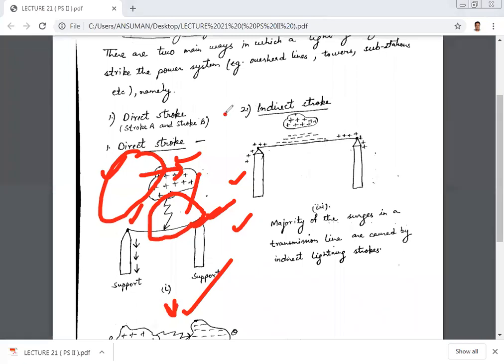In indirect strokes, what happens when the cloud overhead the transmission line passes over the transmission line? The area below the cloud, due to the electromagnetic induction, electrostatically induced charges get concentrated beneath the area of the cloud. The area of the conductor will have positive charge induced.